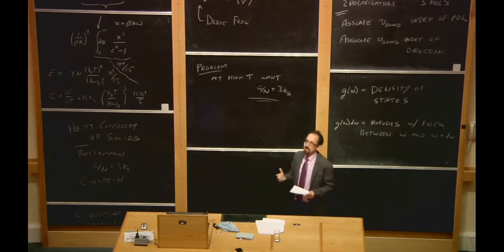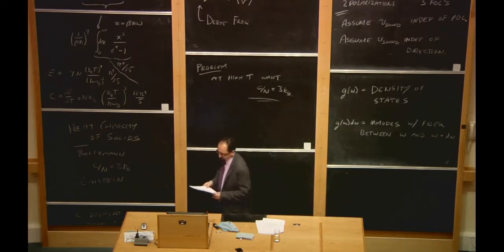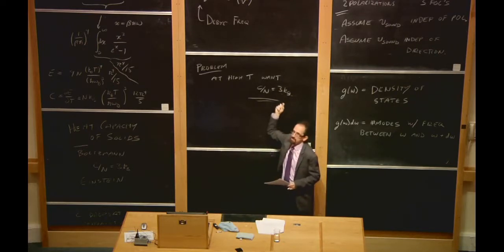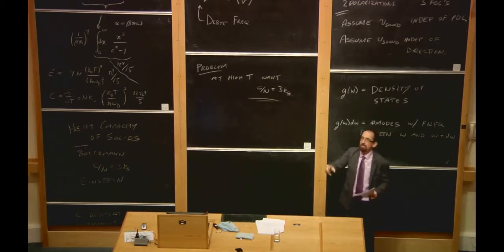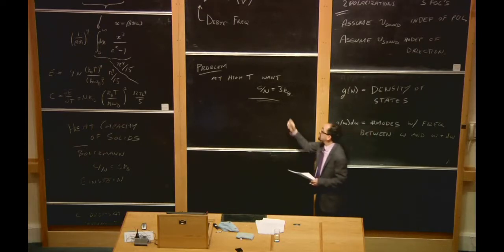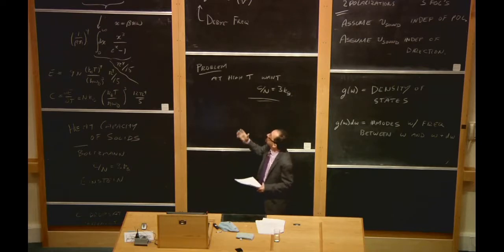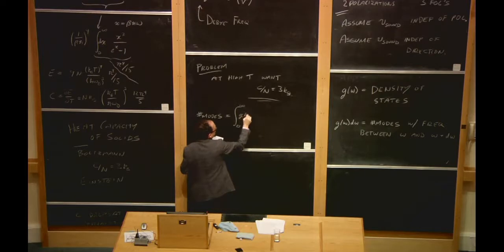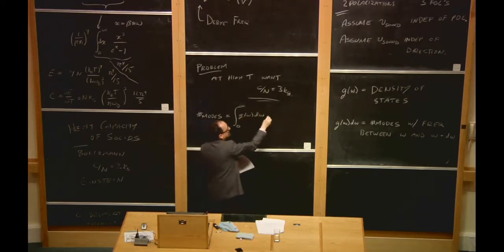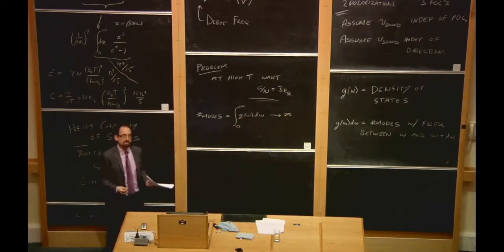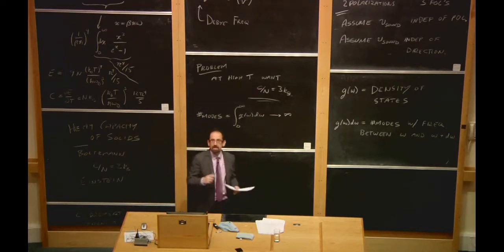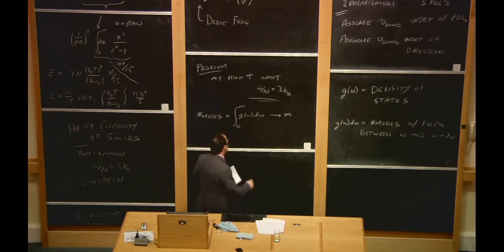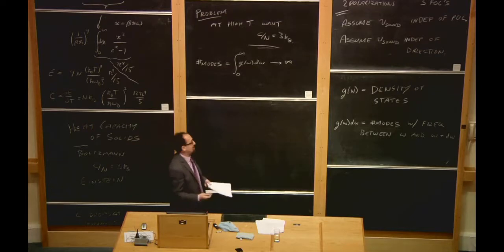Here we have to deviate from Planck's calculation. Debye understood where he was going wrong: the factor of 3 in 3k_B comes from the fact that each atom can move in 3 directions — 3 degrees of freedom. But the total number of modes he counted, integrating g(ω) from 0 to ∞, gives infinity. He had counted an infinite number of degrees of freedom, but there should be only 3N total.